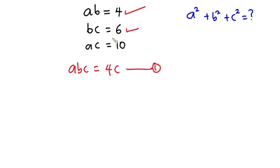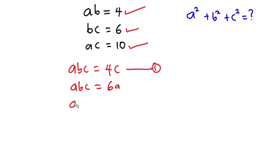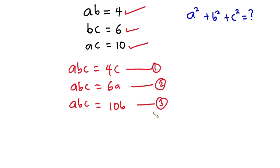If you check the second equation, you can see this one also lacks a, so let's multiply through by a, so we have abc is equal to 6a. And lastly, the third equation also lacks b, so let's multiply through by b, so we have abc is equal to 10b. I'll call this equation two and this equation three.